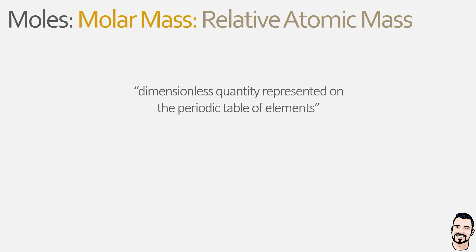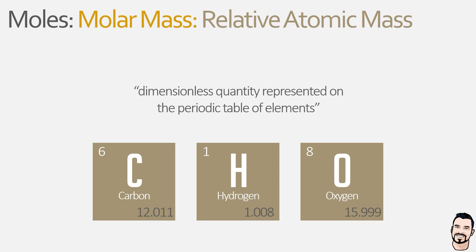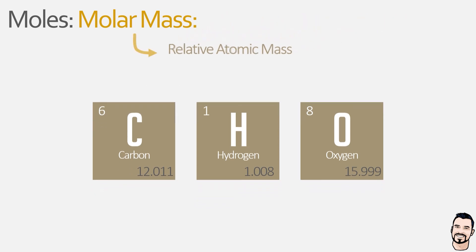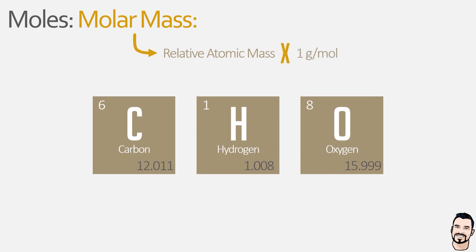Here we can see the periodic table entries for carbon, hydrogen, and oxygen, complete with their atomic number in the top left corner and their relative atomic mass in the bottom right corner. Carbon has a relative atomic mass of 12.011, hydrogen has 1.008, and oxygen has 15.999. These values will differ slightly depending on rounding, so typically values of 12, 1, and 16 are used. To calculate molar mass, we take the relative atomic mass and multiply by 1 gram per mole — giving carbon 12 g/mol, hydrogen 1 g/mol, and oxygen 16 g/mol.